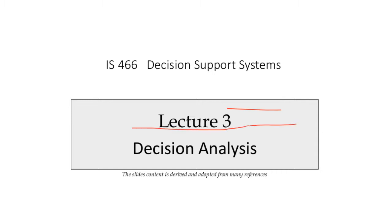Decision analysis allows us to select a decision from a set of possible alternatives regarding the future. For example, suppose I have one million to invest and I want maximum profit. I have several choices: I can invest in foreign exchange, or I can purchase gold — and gold prices have been rising, from around 142 riyals per gram in 2015 to more than 192 now.